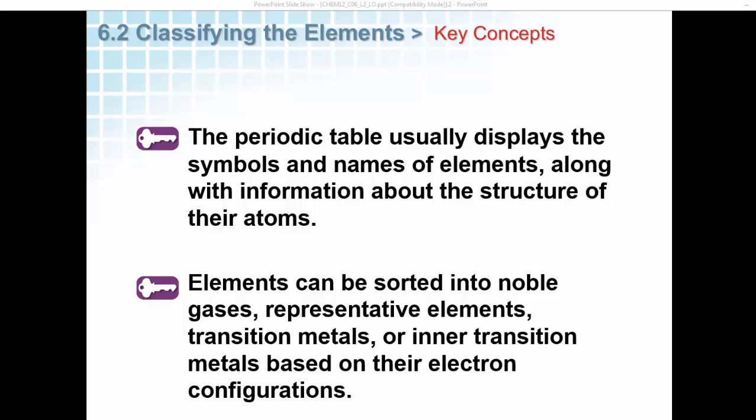The periodic table usually displays symbols and names of elements along with information about the structure of their atoms. Elements can be sorted into noble gases, representative elements, transition metals, or inner transition metals.